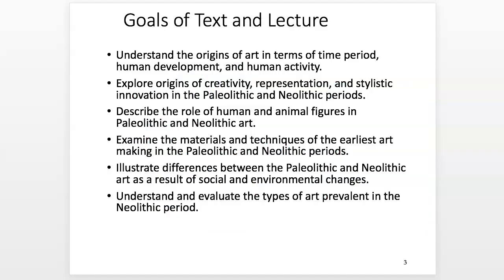Next I want to talk about some goals of the text and lecture from this chapter. We're going to look at understanding some of the origins of art in these time periods as it corresponds to human development and activity. This ties into origins of representation, creativity, and stylistic choices, the role of human and animal figures in art, as well as some of the earliest techniques and materials people used. We'll also look at the difference between Paleolithic Old Stone Age and Neolithic New Stone Age art, and your writing assignment involves comparing some of that.